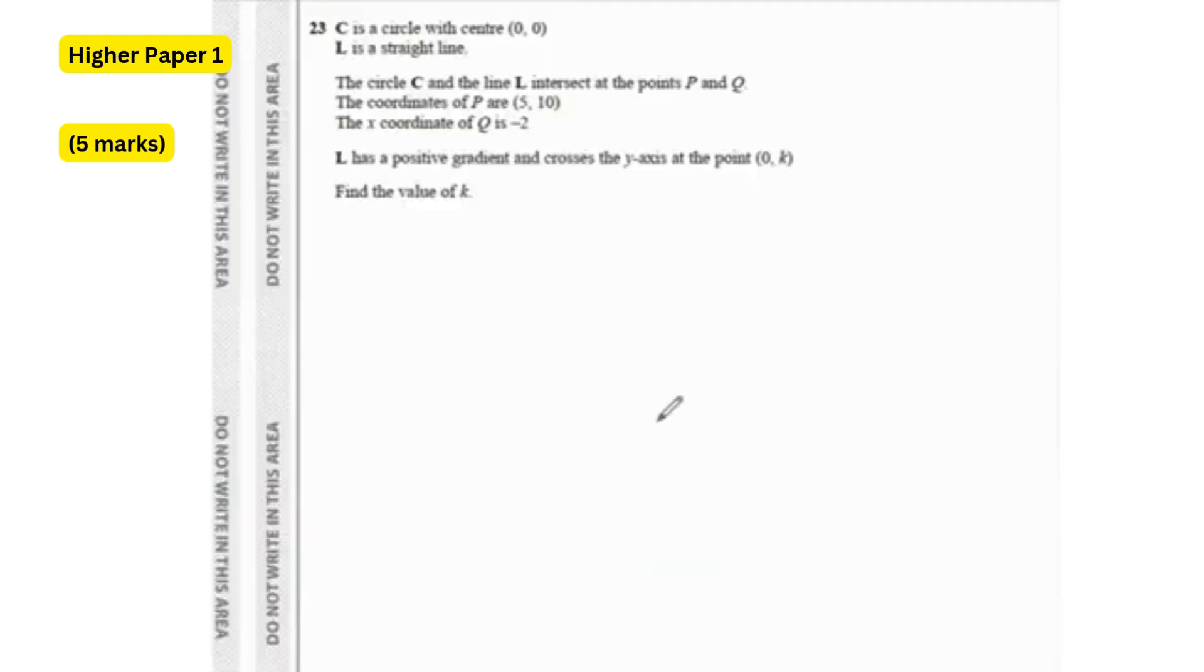For question 23C, is the circle with center 0,0. L is a straight line. The circle C and L intersect at the points P and Q. The coordinates of P are 5,10. And the X coordinate of Q is negative 2. L has the positive gradient and crosses the y-axis at the point 0,K. Find the value of K. So since the circle intersects the line at point P and Q, that means that if we draw this like this and say this is P and this is Q, you have the center over here. Both OP and OQ are the same, because they represent the radius equals to the radius. Because the points are located on the circle, not inside the circle or outside the circle.